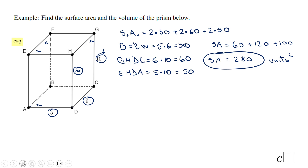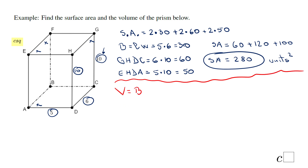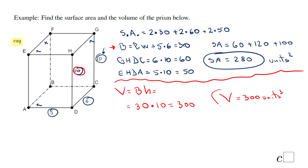Let's move to the volume. The formula says: volume equals area of the base times the height. The base we already calculated is 30, and the height is 10, so it's obviously 300. The volume of this rectangular prism is 300 cubic units.